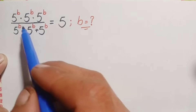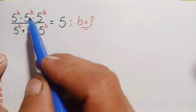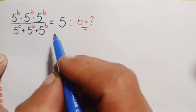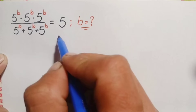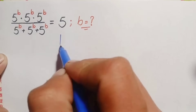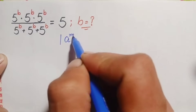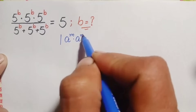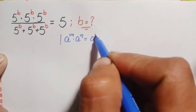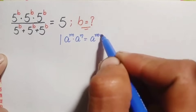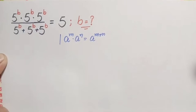Now look into the left hand side. In the numerator the base is the same, so here in the numerator we will use the same base exponential identity. We will use the identity: a raised to power m times a raised to power n, which can also be written as a raised to power m plus n.